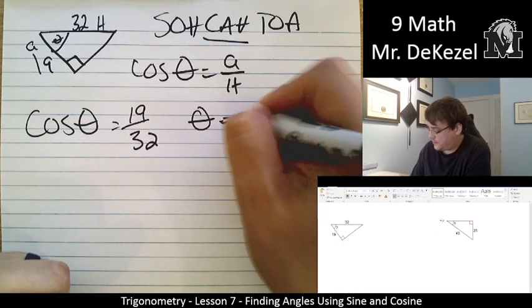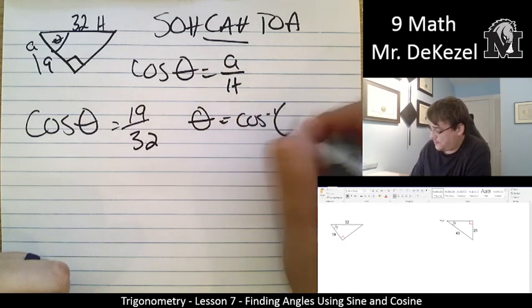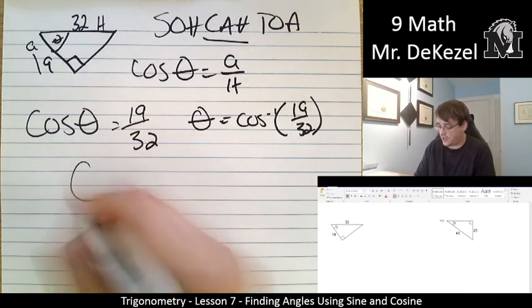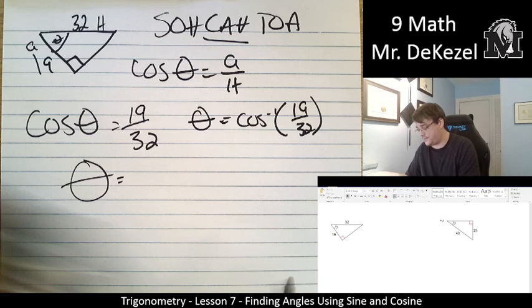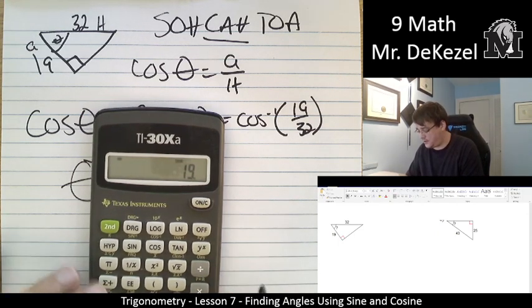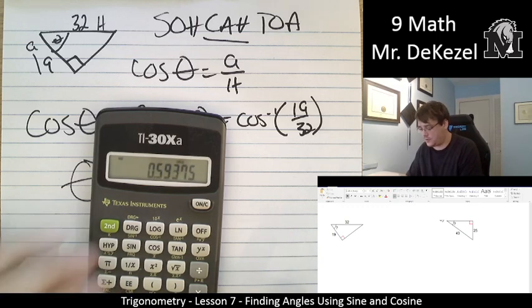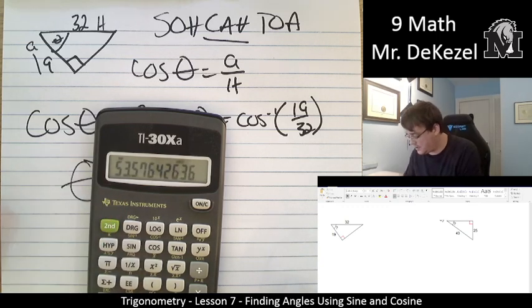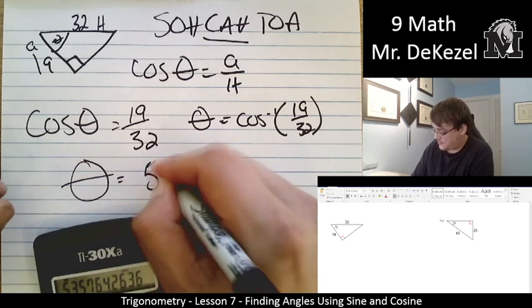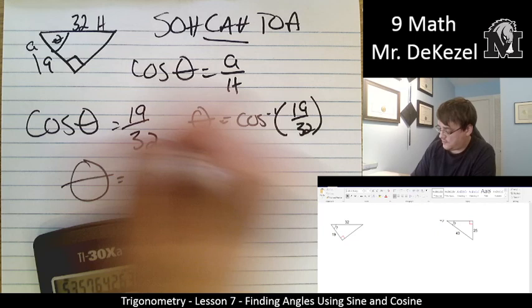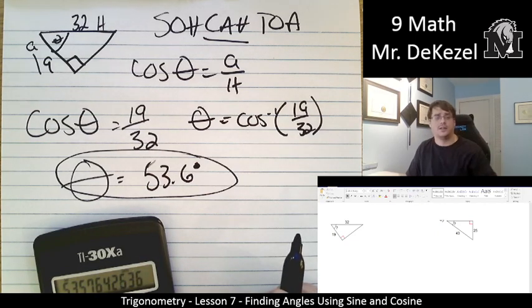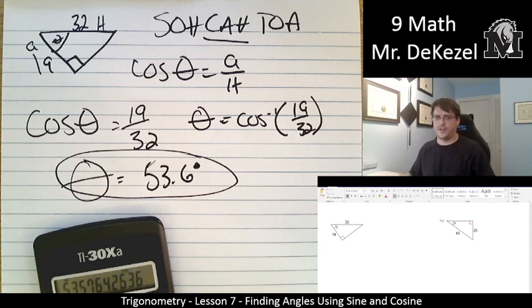Inverse cosine. 19 over 32. And we'll go ahead and find out what angle that is. 19 divided by 32 equals inverse cosine. 53.6. 53.6 degrees. We'll go ahead and circle that. I love it when you circle answers. Helps me. Hopefully, that doesn't ruin it for you.